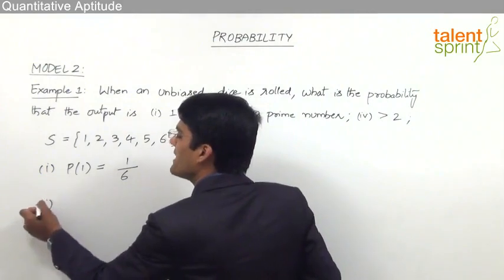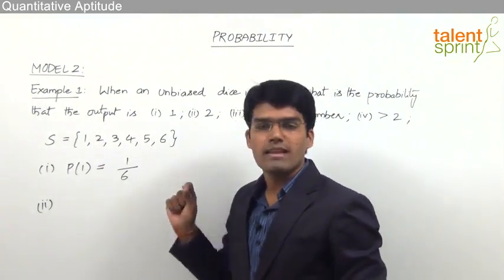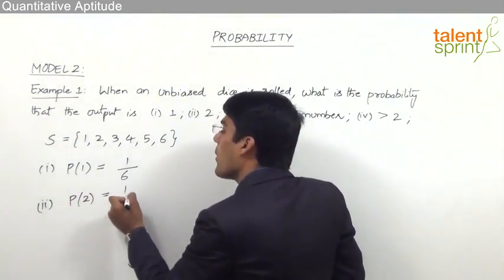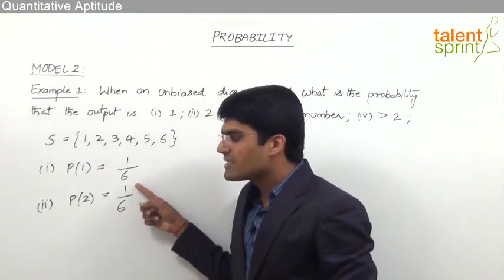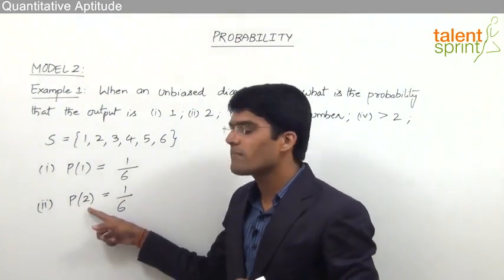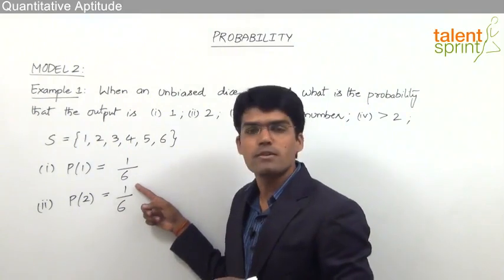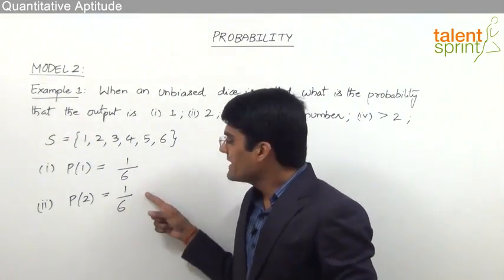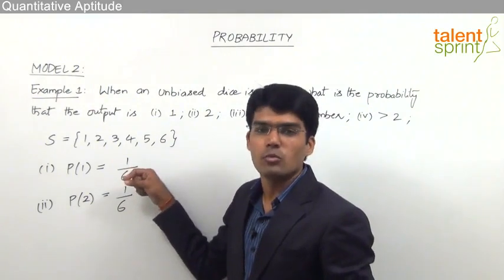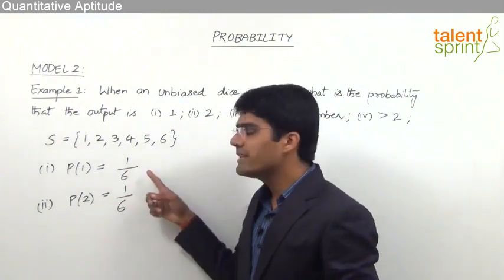In the second question, what is the probability that the output is 2? Again, from the sample space, we get the output as 2 only in one possible way, so the probability is 1/6. Be careful — the answer should be 1/6, not 2/6. The numerator is the number of outcomes in favor of the event, not the actual output value. So whether the outcome is 2, 3, 4, 5, or 6, the probability is always 1/6.